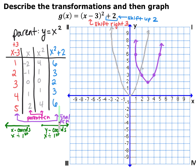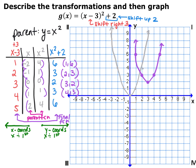Now I've done all my transformations. Whatever is on the furthest outside is my final function. The point originally at (−2, 4) is now at (1, 6). The point at (−1, 1) is now at (2, 3). The origin is now at (3, 2). The point at (1, 1) is now at (4, 3), and the point at (2, 4) is now at (5, 6). That matches all the points we already graphed — this is just an organization tool, and either method works fine.